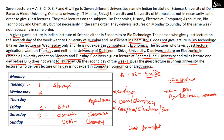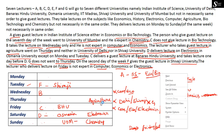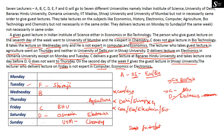A is an expert in either economics or biotechnology, and A must be at Indian Institute of Science. A cannot be on Sunday because University of Mumbai is already placed there. A cannot be on Thursday because agriculture is already placed there. Therefore, A must be on Monday with Indian Institute of Science, though we are still not sure whether the subject is economics or biotechnology.